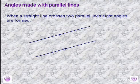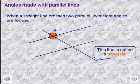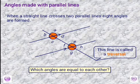Angles made with parallel lines. When a straight line crosses two parallel lines, eight angles are formed. We have a transversal, which is a line cutting through parallel lines. The first four angles are A, B, C and D, and then E, F, G, H, making eight angles in total.